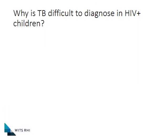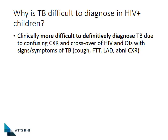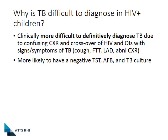Diagnosing TB in children is always a challenge, but even more so if the child is also HIV infected. Children with HIV can have a whole range of opportunistic infections with very similar symptoms. For example, just to differentiate between a community-acquired pneumonia and TB can be very challenging. They are also more likely to have negative tests, false negative TSTs, and AFBs are less likely. Even the GeneXpert is not as easy to pick up bacilli as in adults.